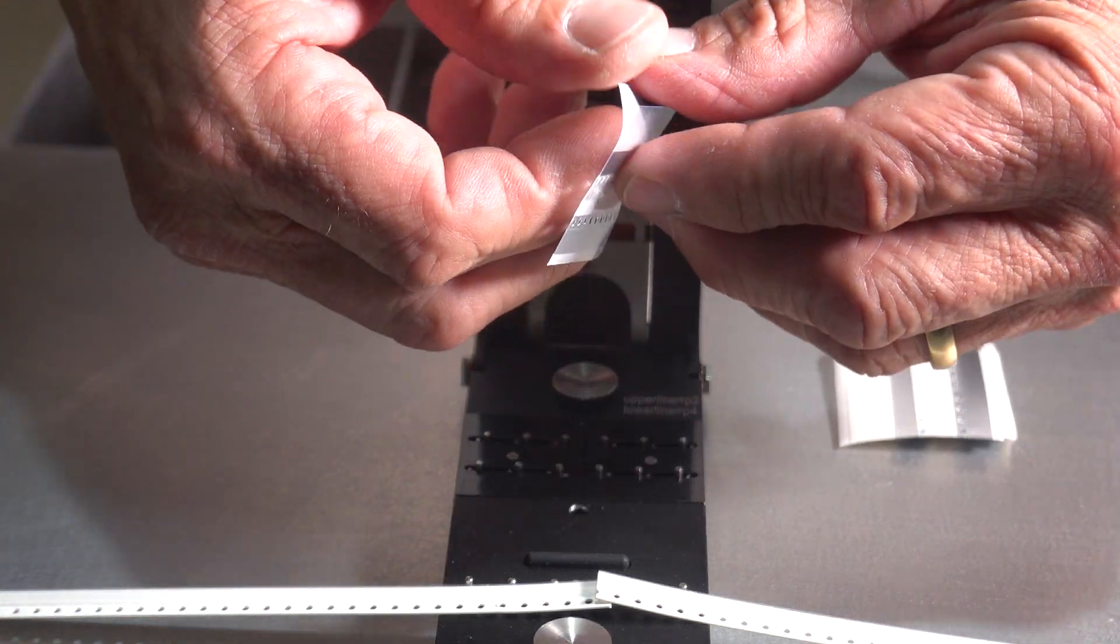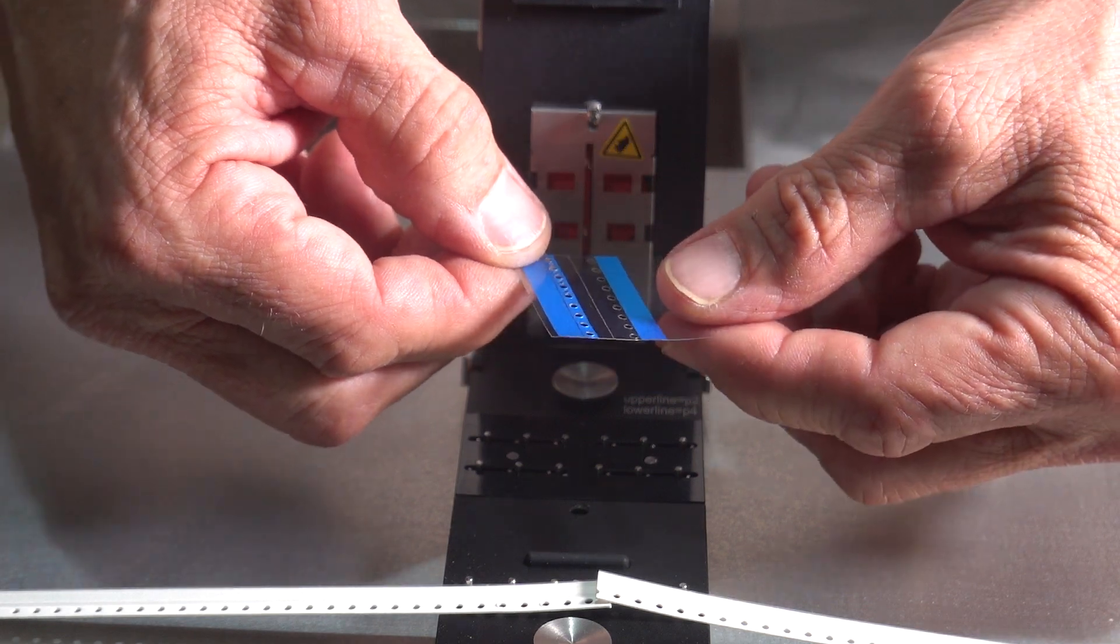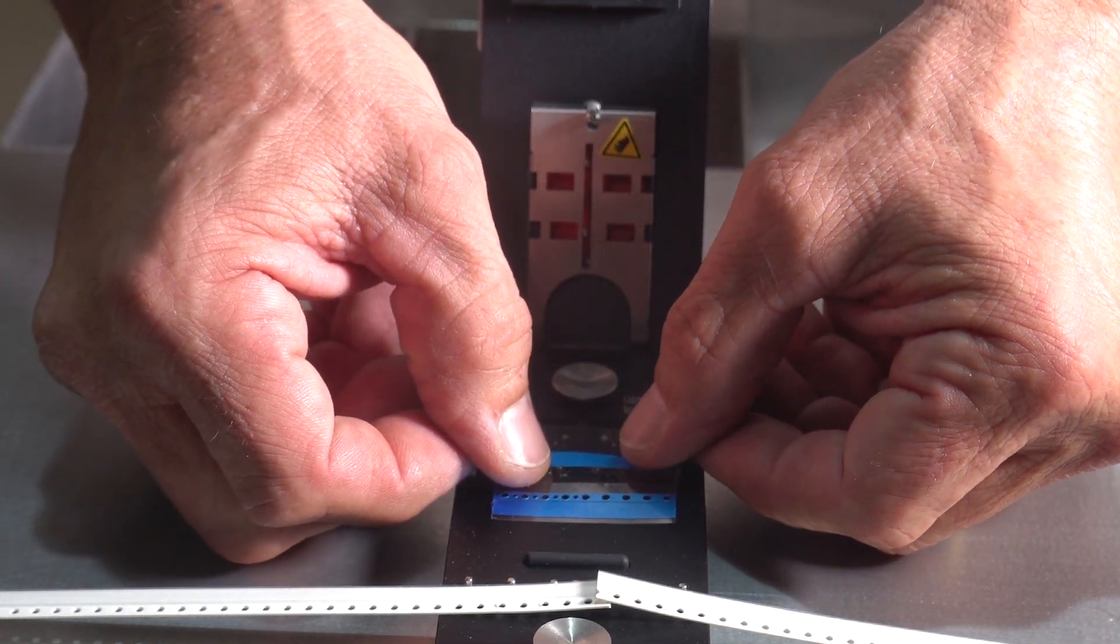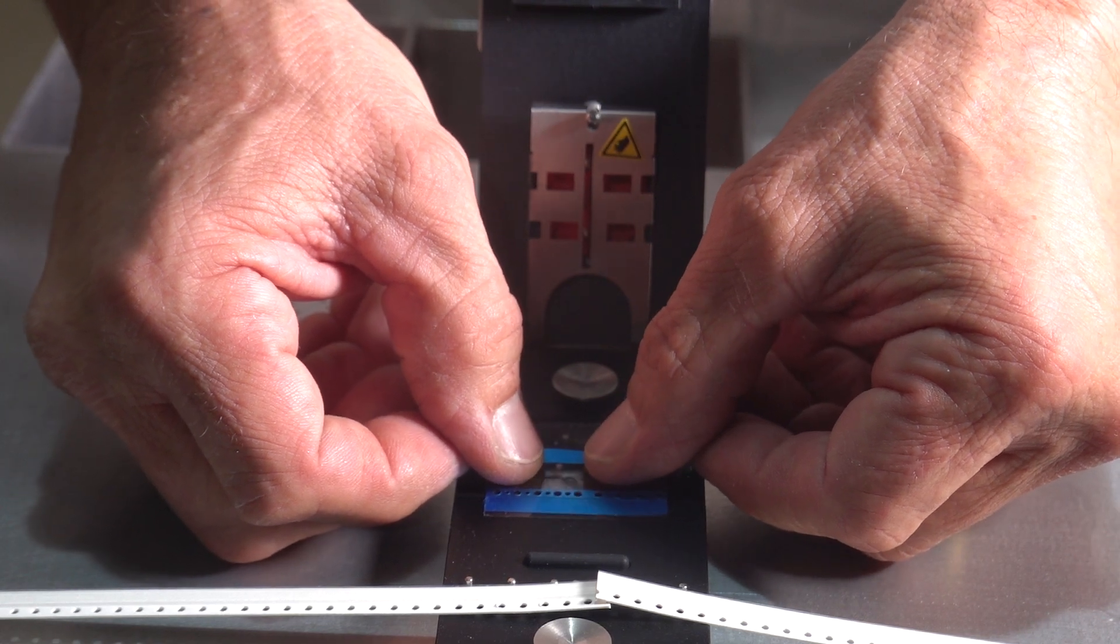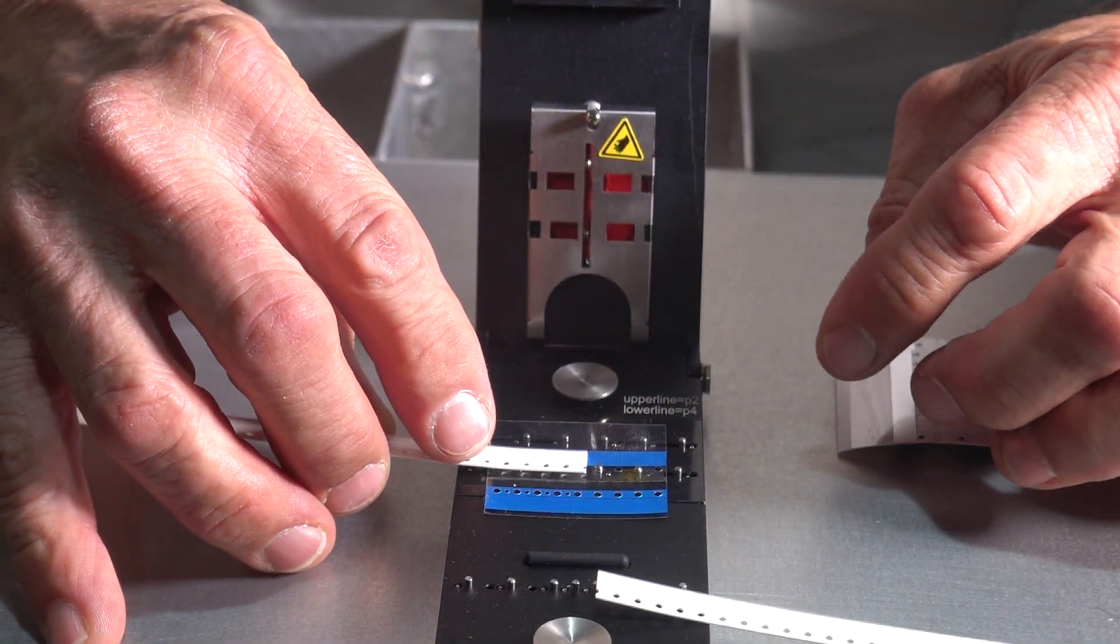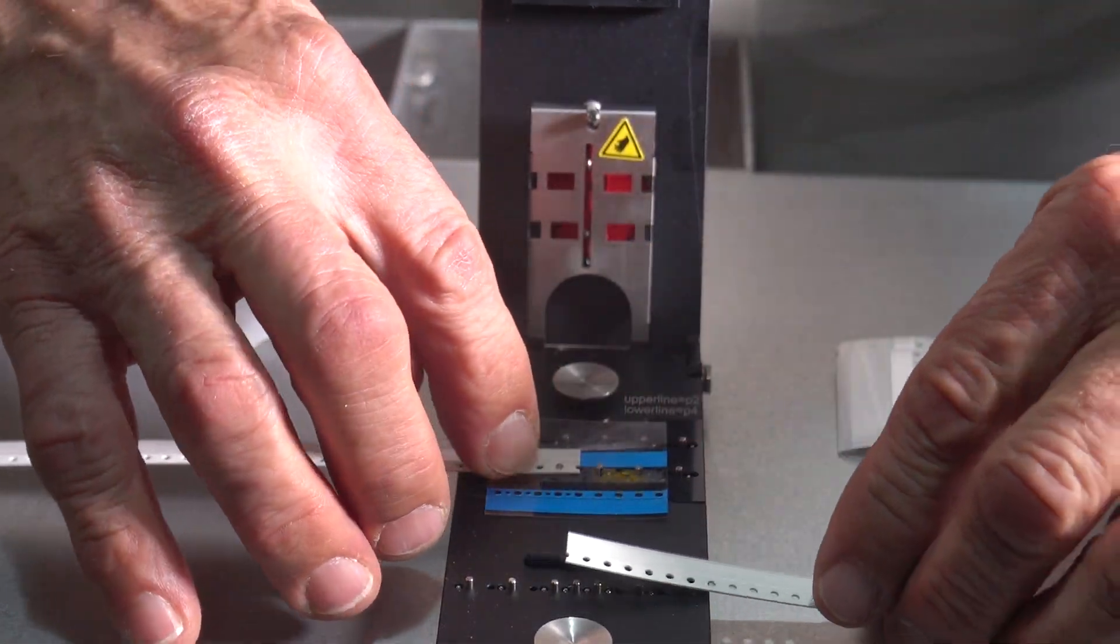We will remove the liner from the Fuji splice and place it in the alignment pins on the tool itself. Then we will place the two pieces of carrier tape to be spliced on there as well.